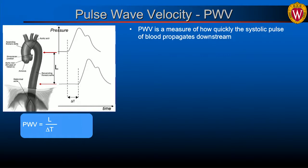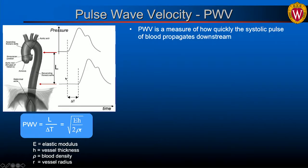The systolic pulse moves downstream along the aorta, creating a delay in arrival times of those pressure or flow waves. If you know the delay — measured as delta T — and measure the distance between those two measurement locations, you can derive pulse wave velocity as the ratio of length over time delay. Pulse wave velocity is also defined as the square root of parameters that include the elastic modulus — a tissue property — vessel wall thickness, blood density, and vessel radius.